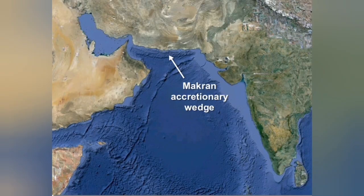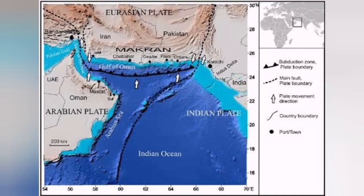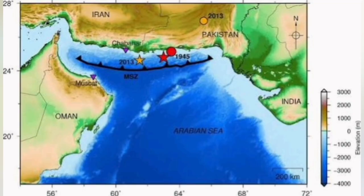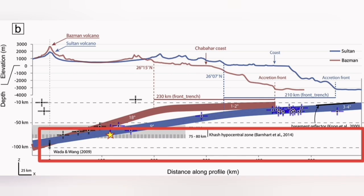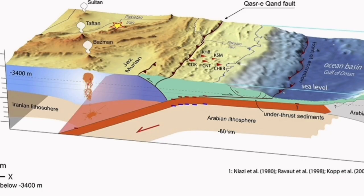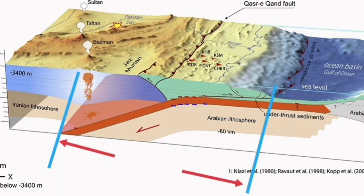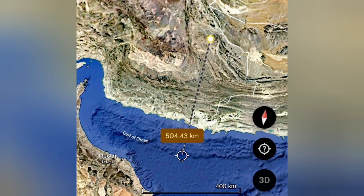At the boundary of the plates, we have a subduction zone in Iran called the Makran subduction or accretionary wedge. When the slab of oceanic crust goes down, it comes back to the surface as a volcano. The typical distance between the oceanic trench and the volcano is 500 kilometers or more, but in Iran this distance is shorter, becoming a little over 500 kilometers toward the northeast into Afghanistan and Pakistan.